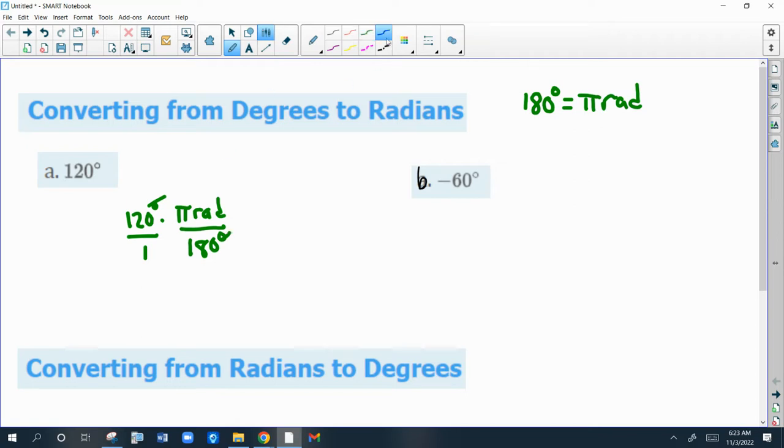I'm going to just cross-cancel what I can. They're both divisible by 10, so I have 12 and 18 now, and they're both divisible by 3. So I have 4 and 6 now. Those are both divisible by 2, so I have 2 and 3 now. If you look closely, I have on top 2 pi radians divided by 3. So 120 degrees is 2 pi over 3 radians.